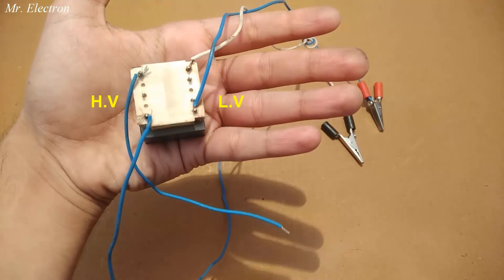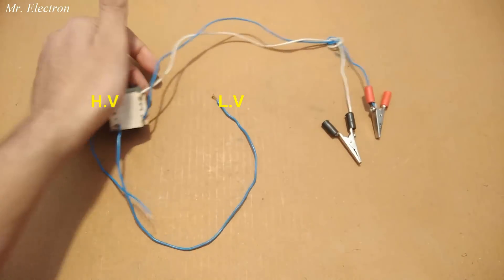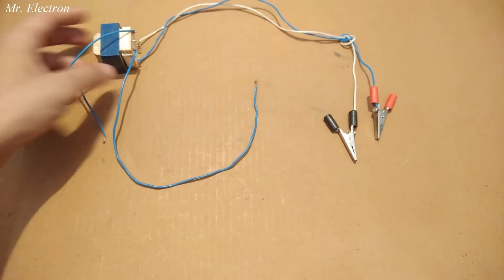The side of the transformer to which the clips are attached is the low voltage side, while the other side to which the blue wires are connected is the high voltage side.